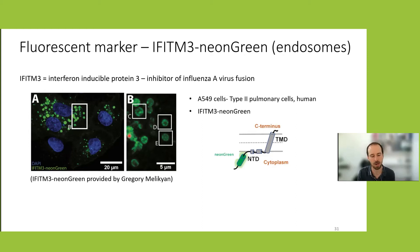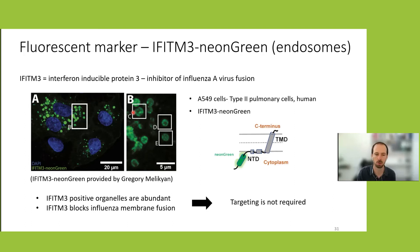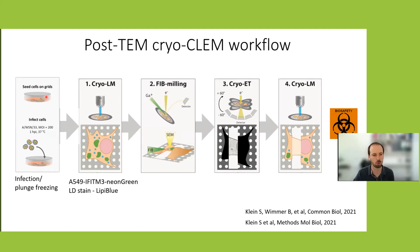We can see IFITM3-positive late endosomes and lysosomes as organelles in these cells. Because there are many of these organelles and IFITM3 can block membrane fusion — which is otherwise very transient — we don't need to target a single virion but expect accumulated arrested virions in these organelles. The workflow: cells are seeded on grids, infected with ~200 viruses per cell to increase chances of finding them, then immediately plunge-frozen without fixation, as this is done in BSL-2 conditions.